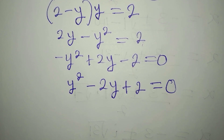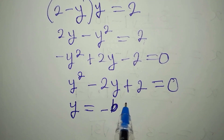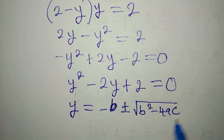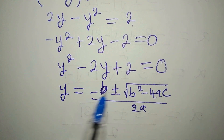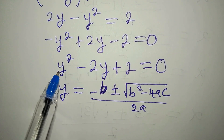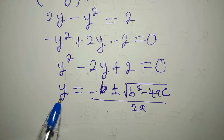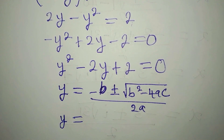We will solve this using the quadratic formula: y equals negative b plus or minus square root of b squared minus 4ac, all over 2a. If you're used to seeing x on the left, it's because x is usually the unknown. Since we're solving for y, y is the subject. Here, b is minus 2.